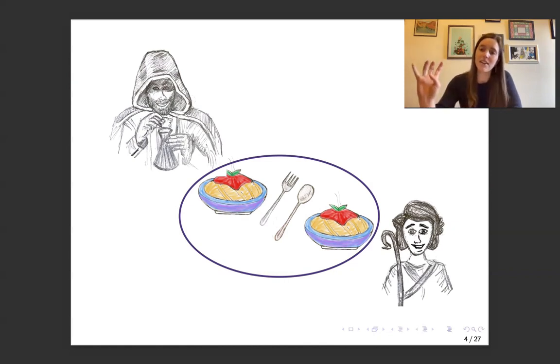All right, so the game or the problem is we want Santiago and the alchemist to be able to eat their bowl of spaghetti. And we want to design a set of directions in order for them to do that. But there are a couple of caveats.